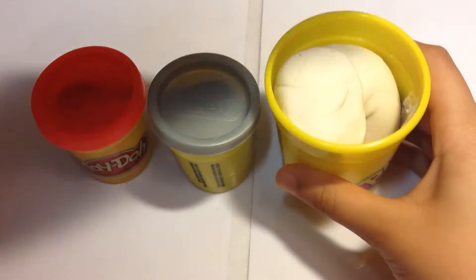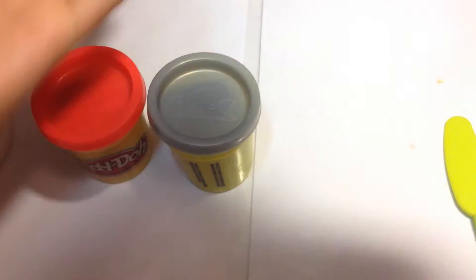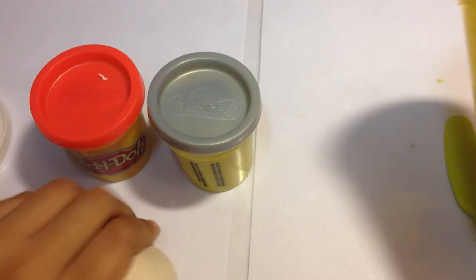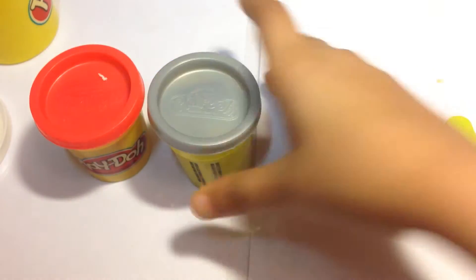So first, you have to take your white Play-Doh and you have to roll it like this.